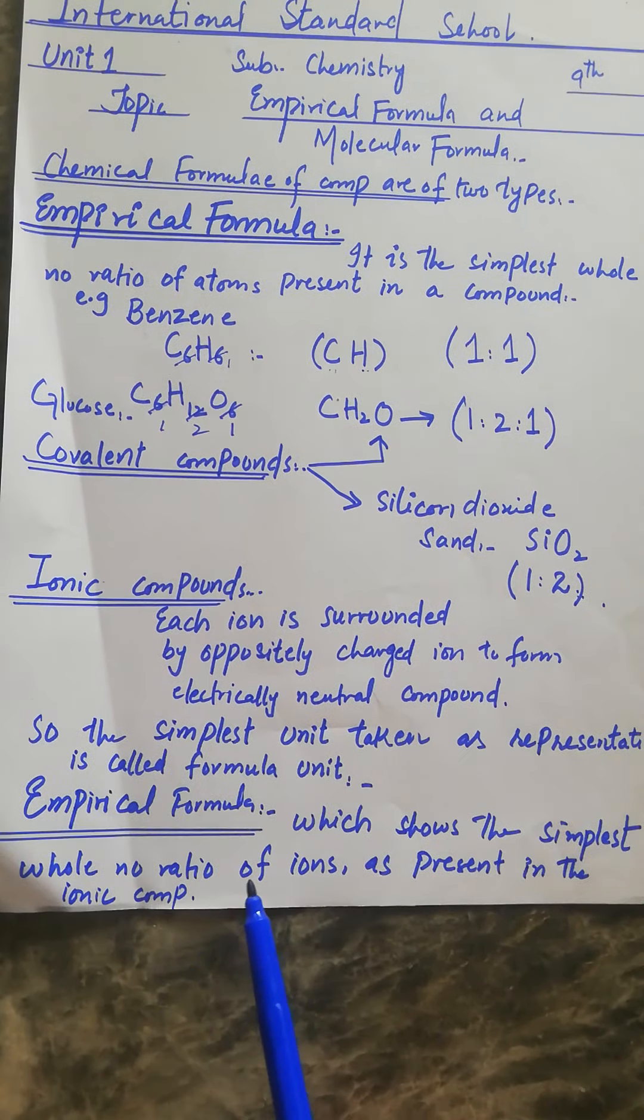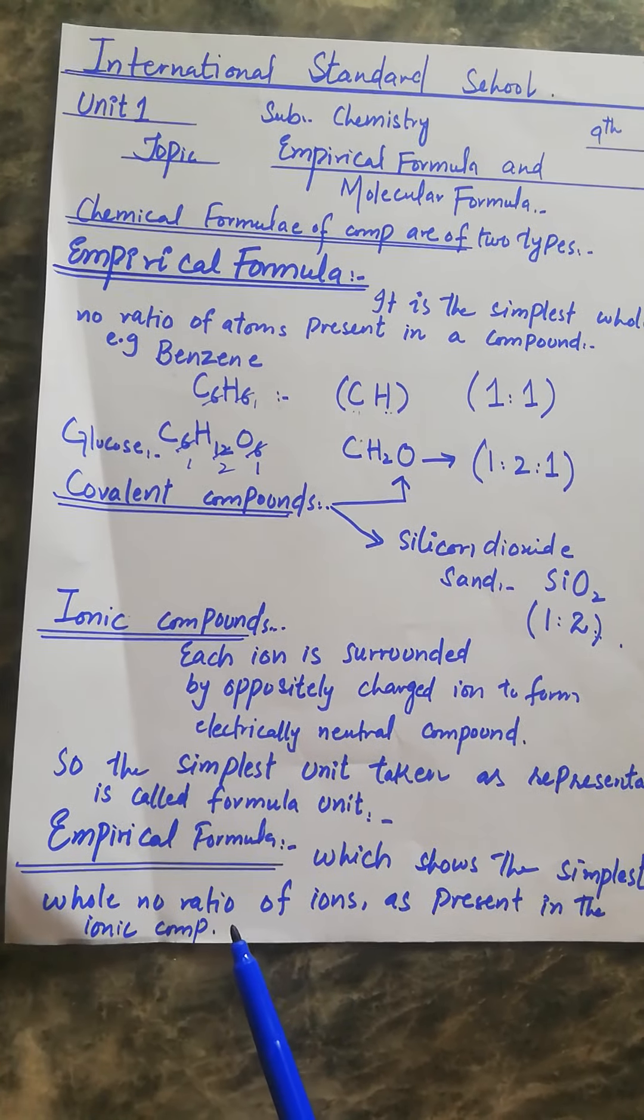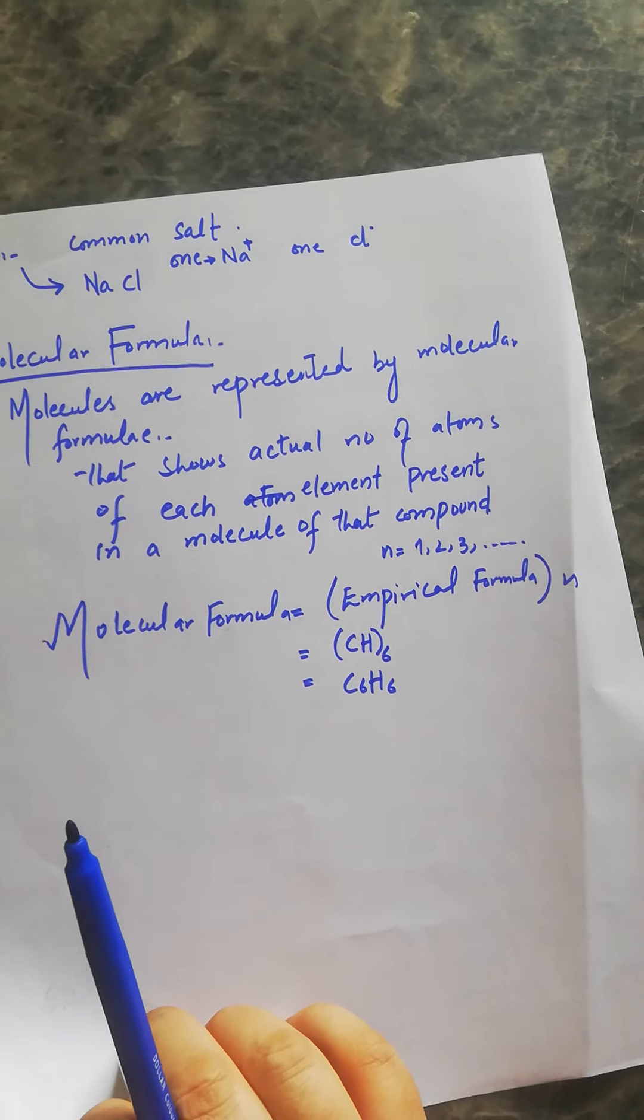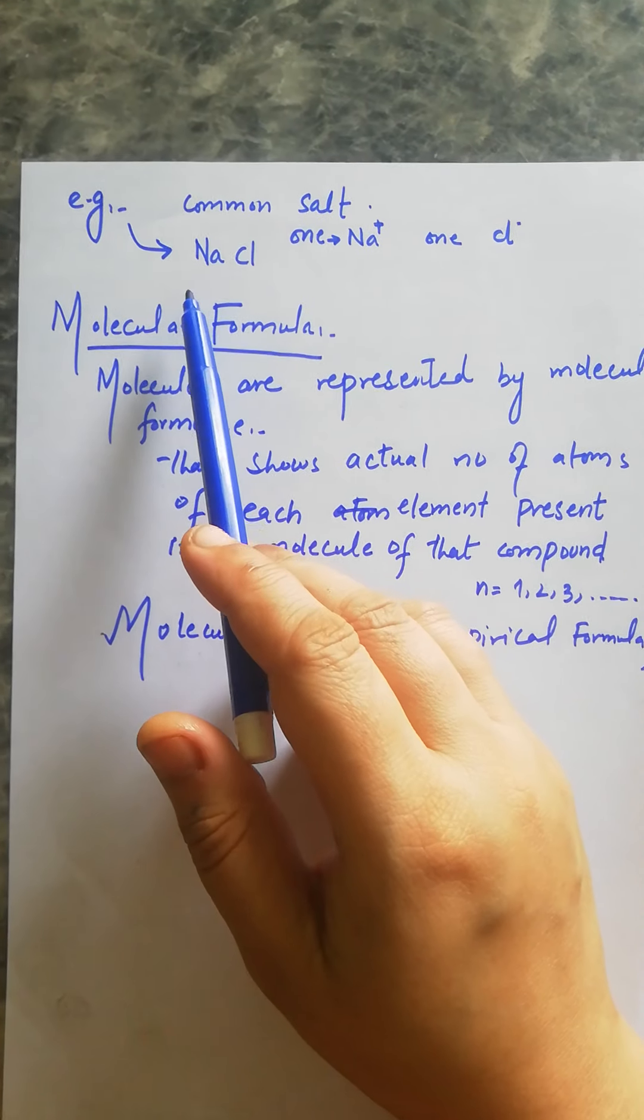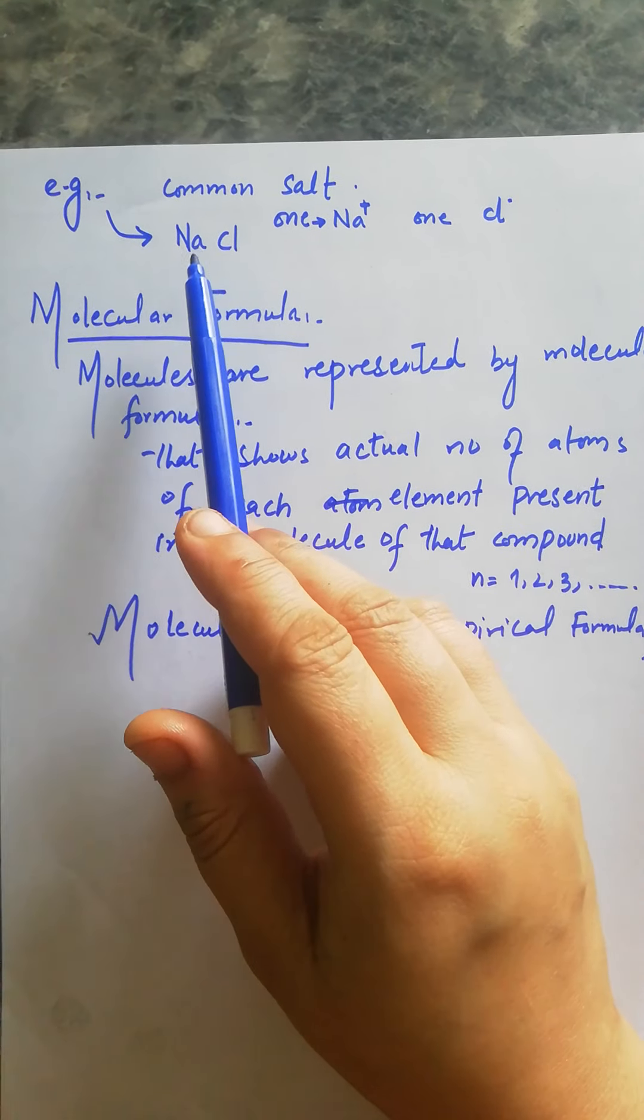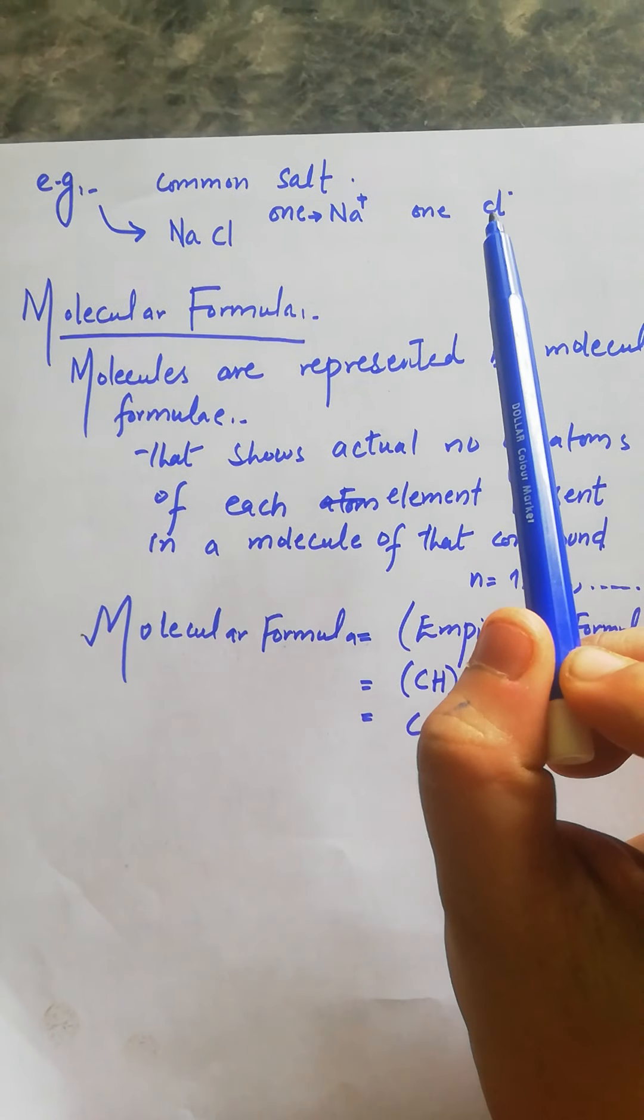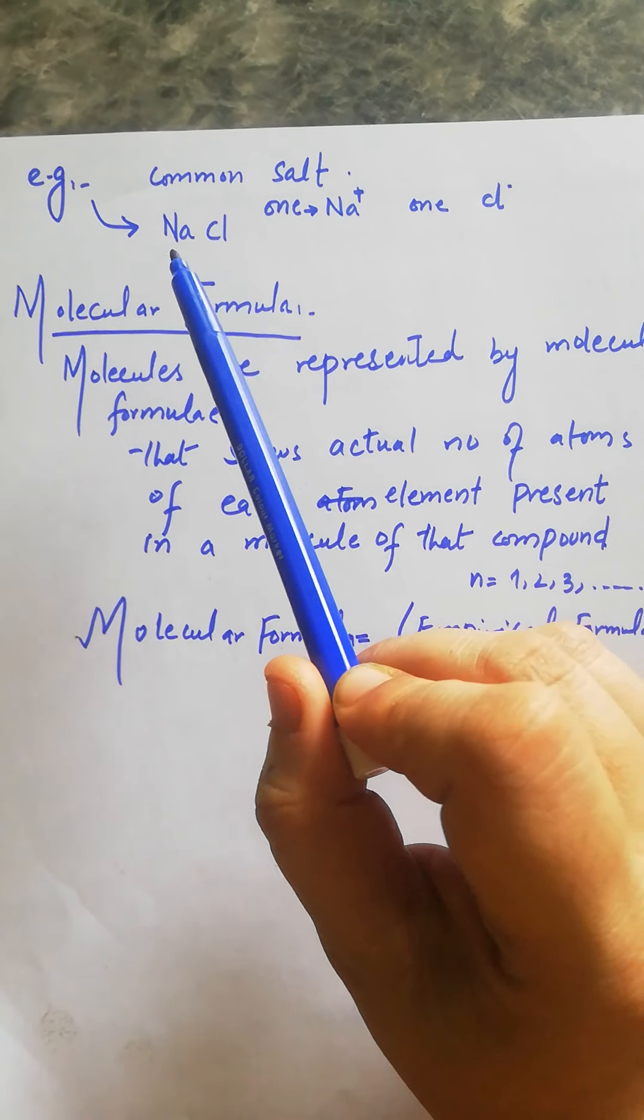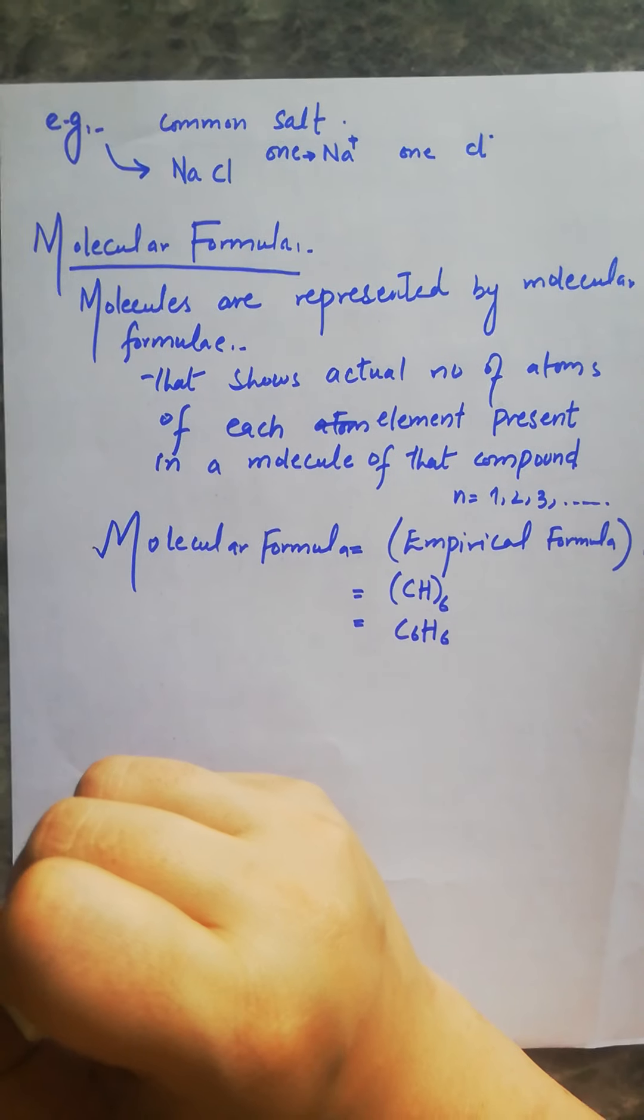For example, common salt, which is sodium chloride, has two ions: one sodium ion and one chloride ion. The ratio between them is 1:1, so this is the empirical formula. Now let's define molecular formula.